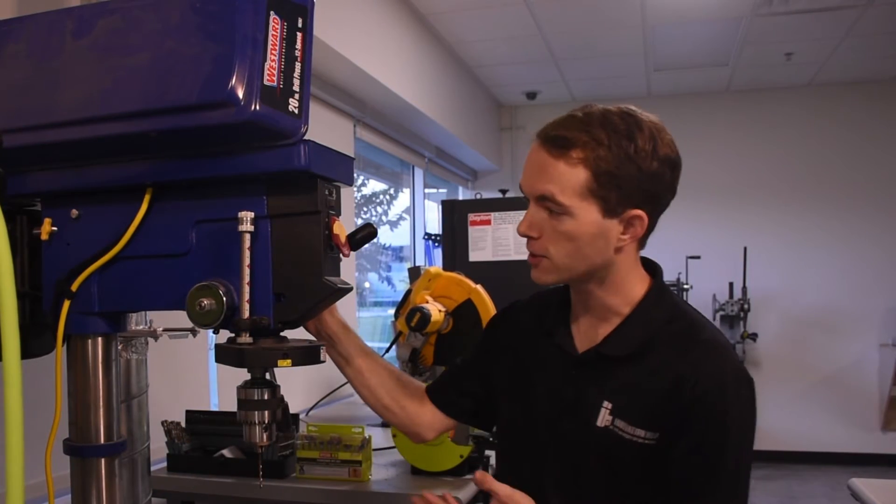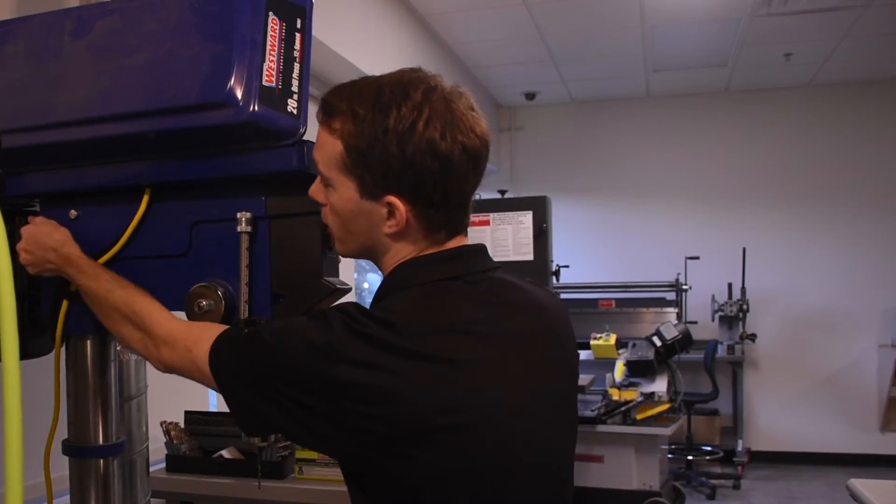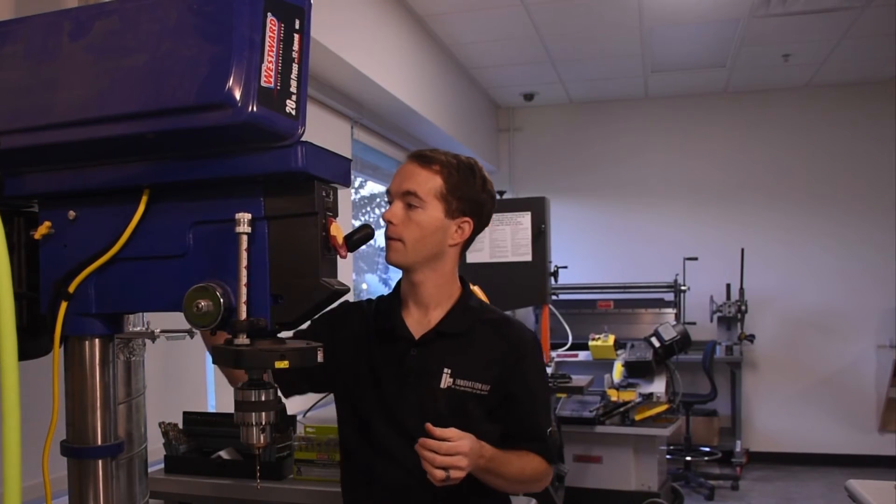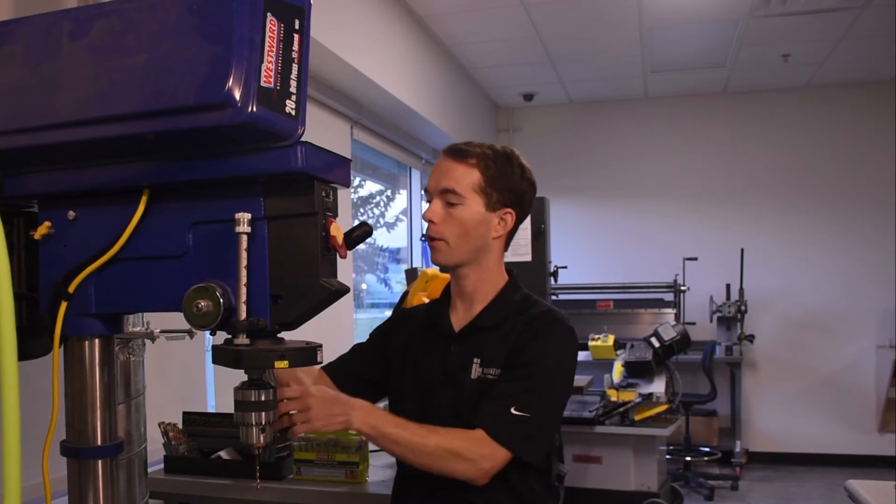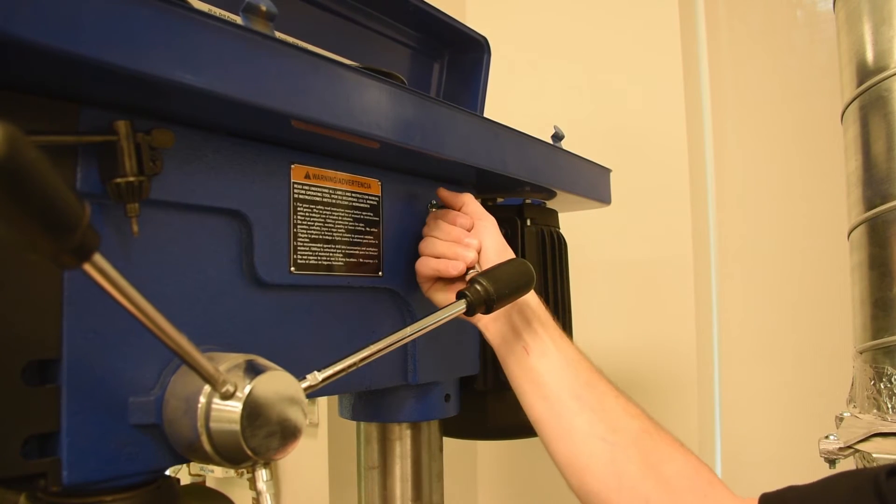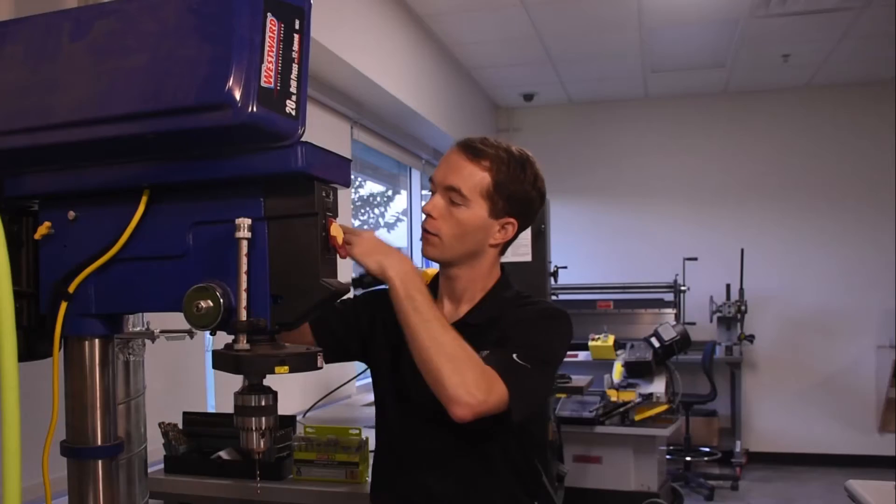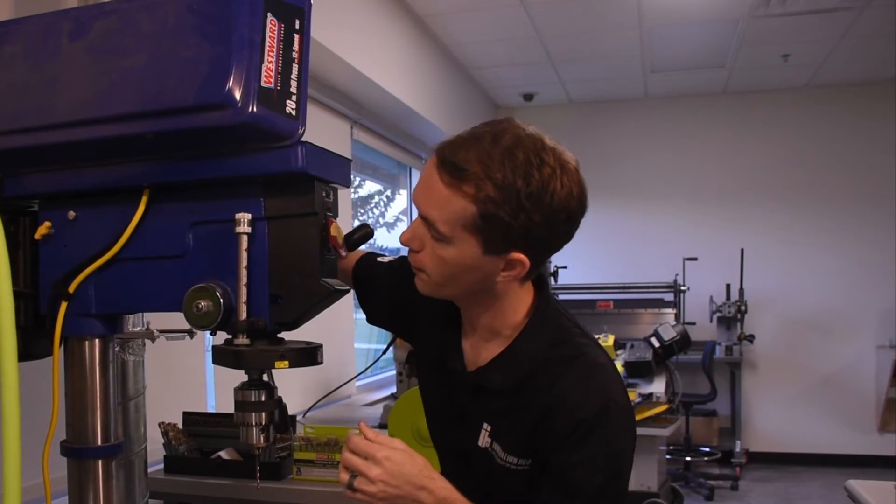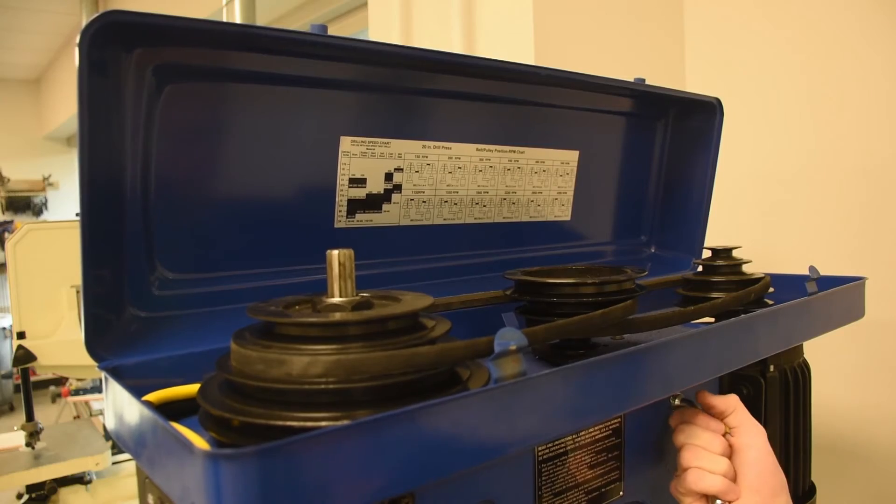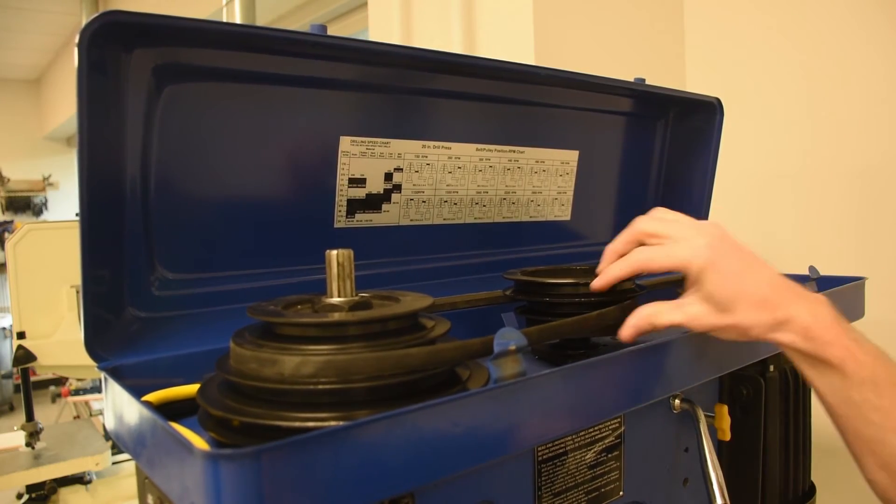So to change the speed of this, on each side, there are two little yellow thumb screws. Loosen both of those a little bit. Then on this side over here, where the spindle handle is, pull this little silver handle forward. You'll notice that when this lever gets pulled, the motor slides forward. This releases the tension on the two belts up here.